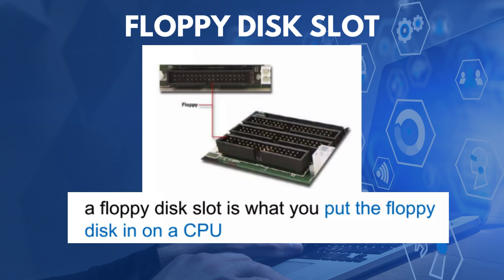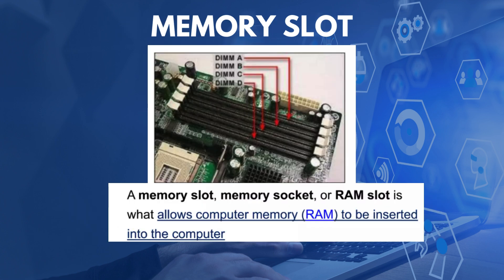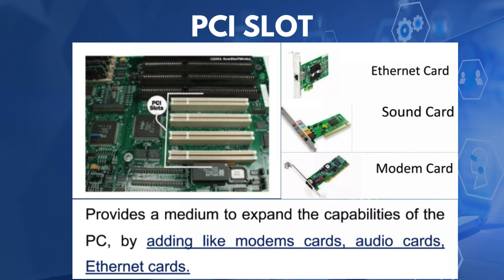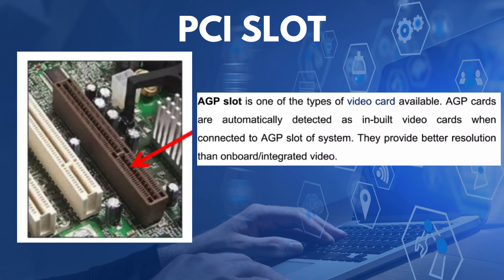The floppy disk slot is where you insert the floppy disk on a computer. A memory slot, also called a memory socket or RAM slot, is what allows computer memory to be inserted into the computer. The PCI slot provides a medium to expand the capabilities of the PC by adding modem cards, audio cards, and Ethernet cards. The AGP slot is one of the types of slots for video cards. AGP cards are automatically detected as video cards when connected to the AGP slot and provide better resolution than on-board or integrated video.